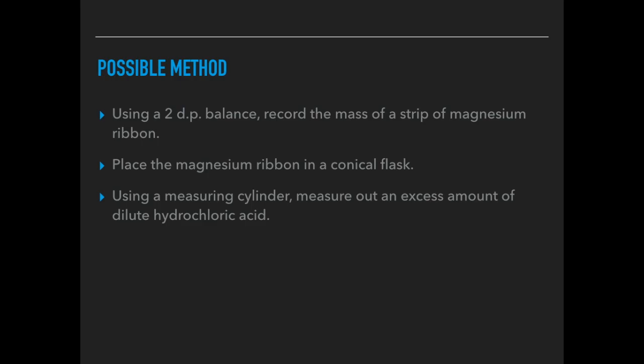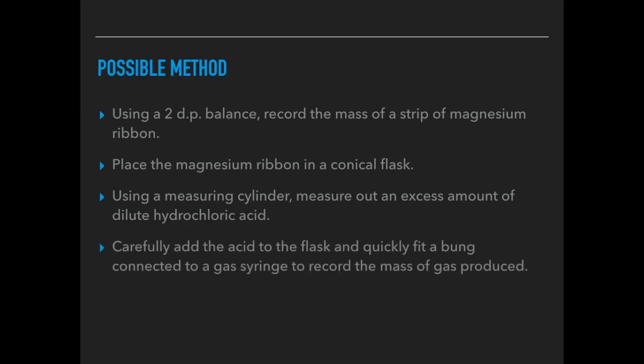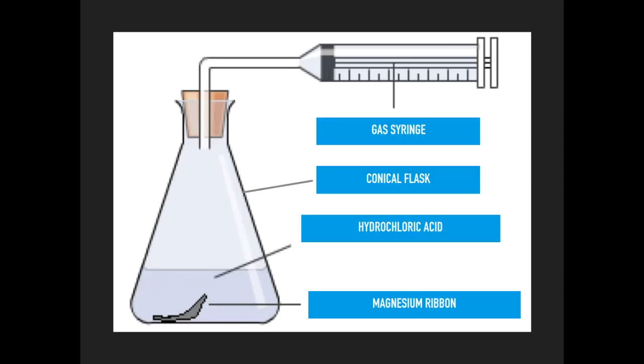Carefully add the acid to the flask, quickly fitting a bung connected to a gas syringe, and that's going to record the mass of gas produced. When the syringe stops moving, record the final volume of gas produced. That's what your experiment would look like.